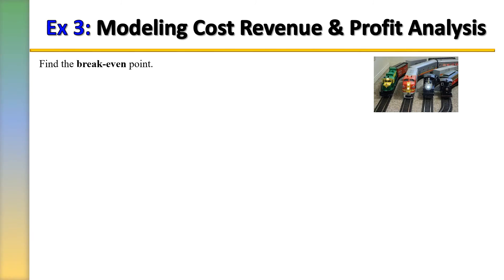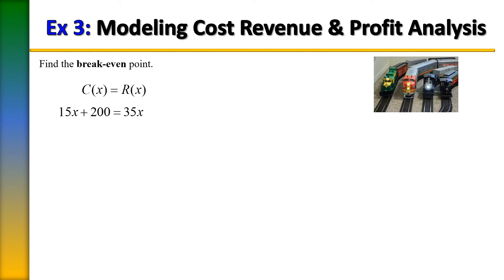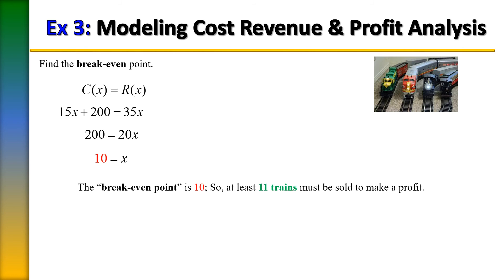To find the break-even point, recall it is where the cost function equals the revenue function. Setting them equal: 15x + 200 = 35x. Subtracting 15x from each side and then dividing by 20 gives x = 10. So Richard's break-even point is 10 — anything he sells more than 10 trains will be a profit.